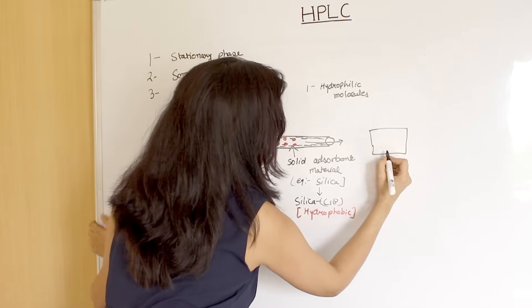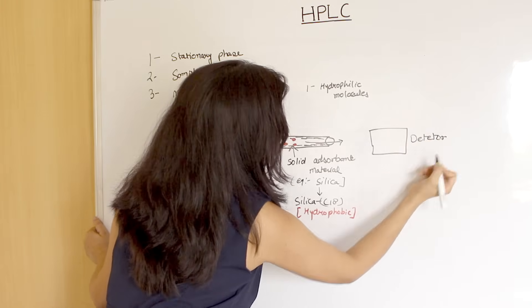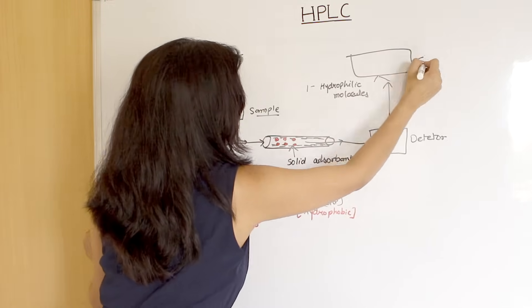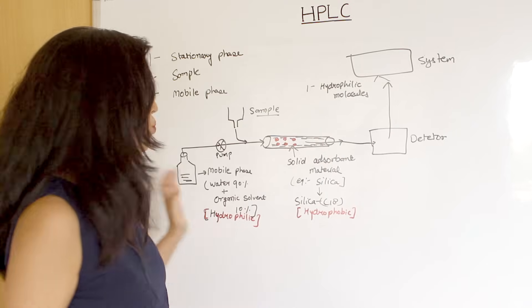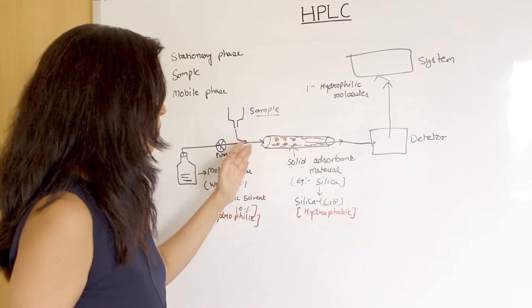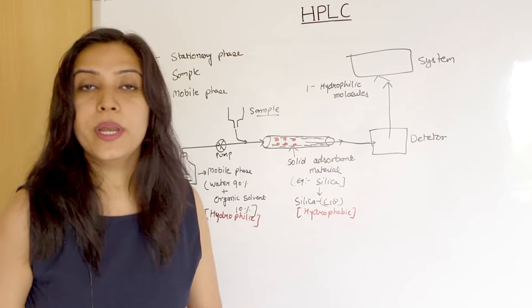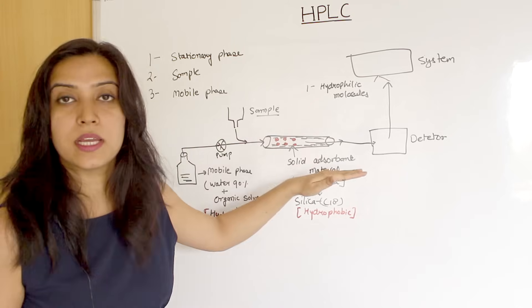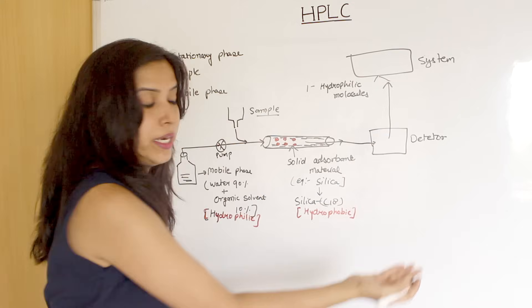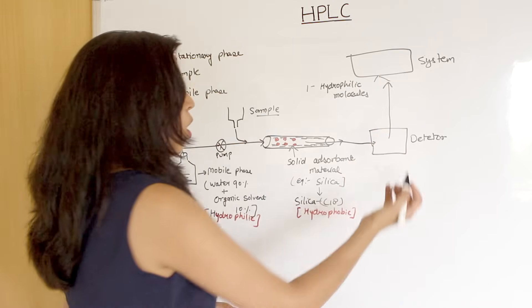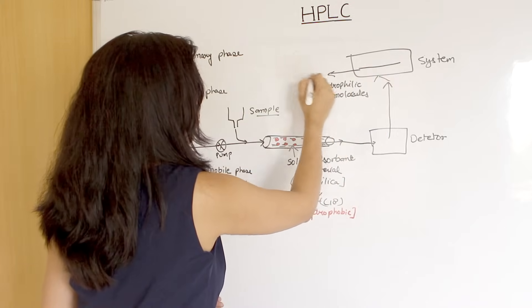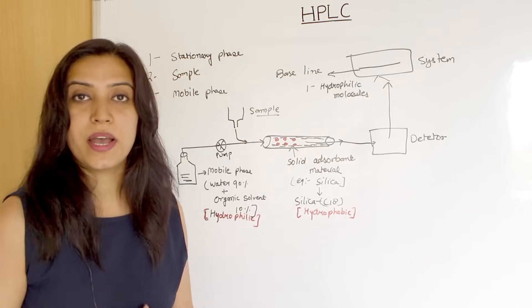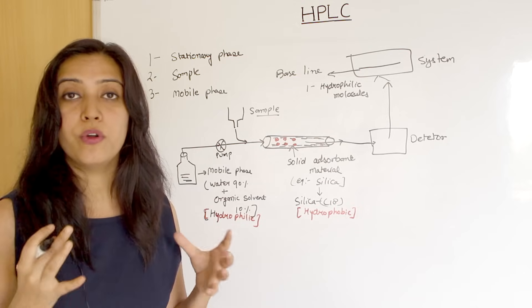The next device attached to the column is a detector. The detector detects the hydrophilic molecules and sends a signal to the system. In the initial stage, before the sample is run, the column is equilibrated — only buffer is passed through. What happens when the buffer passes is that the detector detects the baseline material, and a baseline is developed. When the baseline is stable, the column is ready for purification.